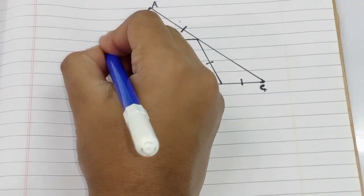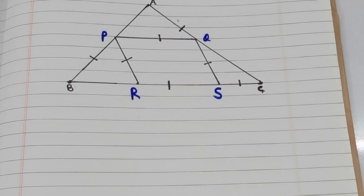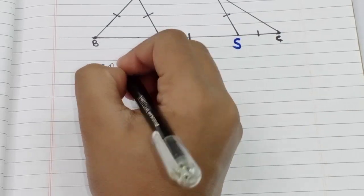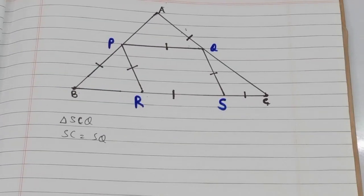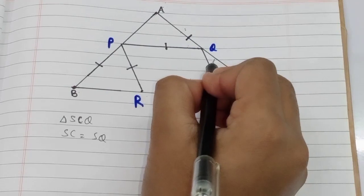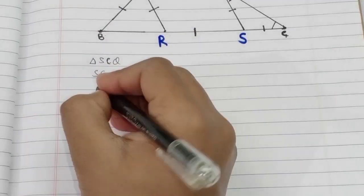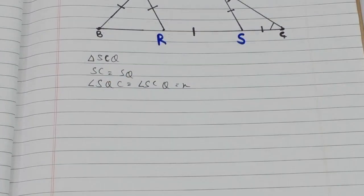For our convenience, let's name this quadrilateral P, Q, R, and S. Now let's solve this. If we look at triangle SCQ, SC is equal to SQ. If two sides of a triangle are equal, then the angles opposite to those sides are also equal. So angle SQC equals angle SCQ, and let's call each of them x.